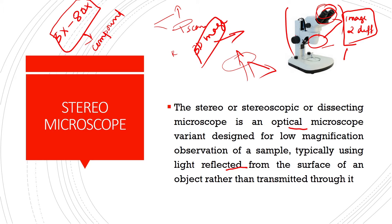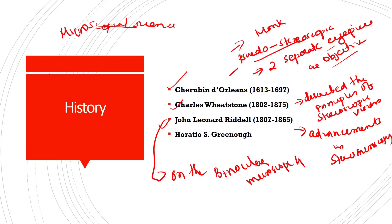It uses reflected light rays from the specimen surface instead of transmitted light rays. Because it has two eyepieces and two objectives, it provides a three-dimensional image of the specimen rather than a flat image. The magnification power of a dissecting microscope ranges from 5x to 80x.